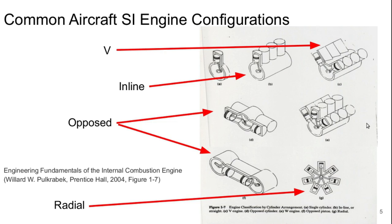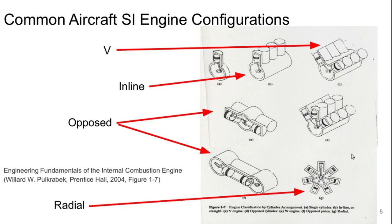Here's a schematic illustration of the different types of configurations. V and inline engine configurations should be very familiar to most of you, since most of the cars you'll have driven in will have had one or the other of these configurations. Horizontally opposed and boxer engines are also used in some vehicles you may be familiar with, and all of these are also used in aircraft. The radial engine, on the bottom right, is the aerospace-specific engine configuration. In this configuration, the cylinders are arranged in a radial pattern around the central crankshaft.